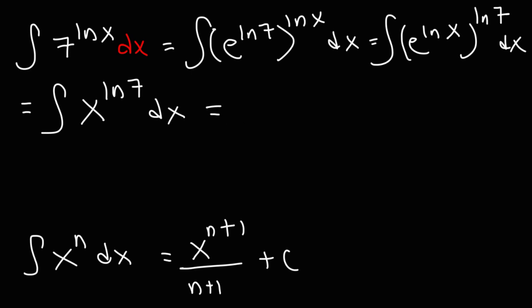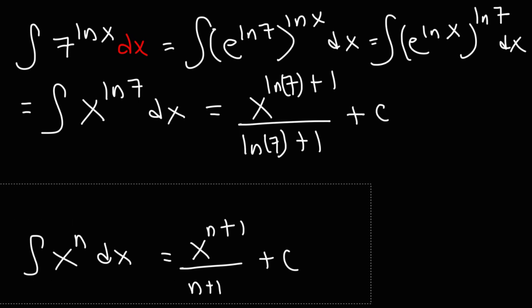So the antiderivative of x raised to the natural log of 7 is going to be x raised to the natural log of 7 plus 1 divided by the exponent ln 7. And then don't forget, plus c. So that is our answer right there, but we're going to adjust it a bit.